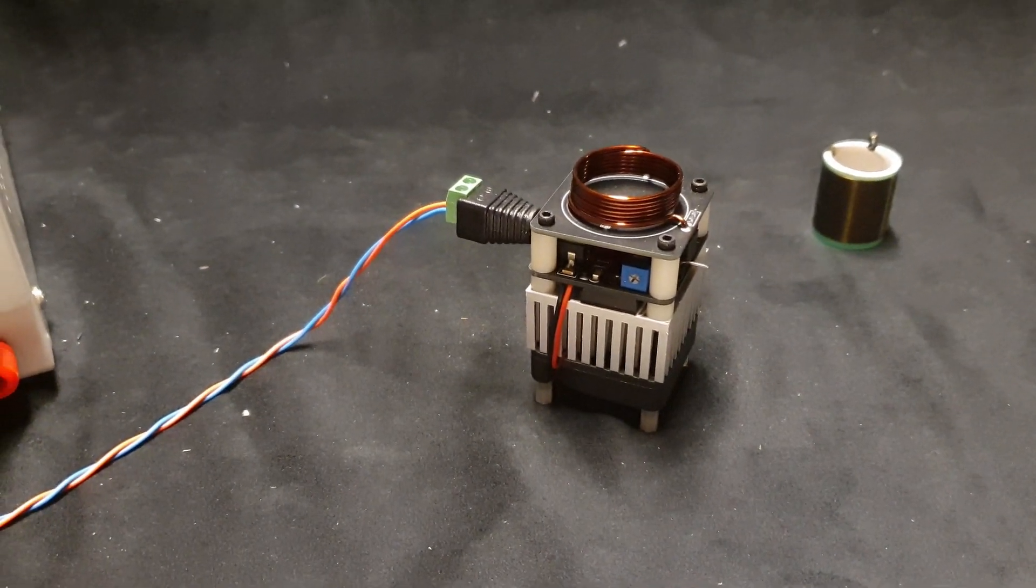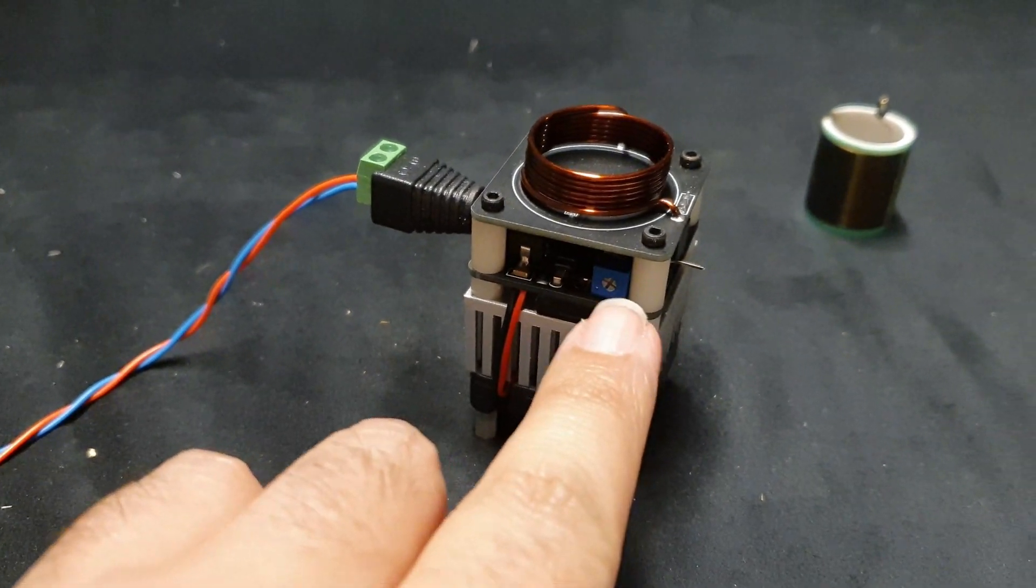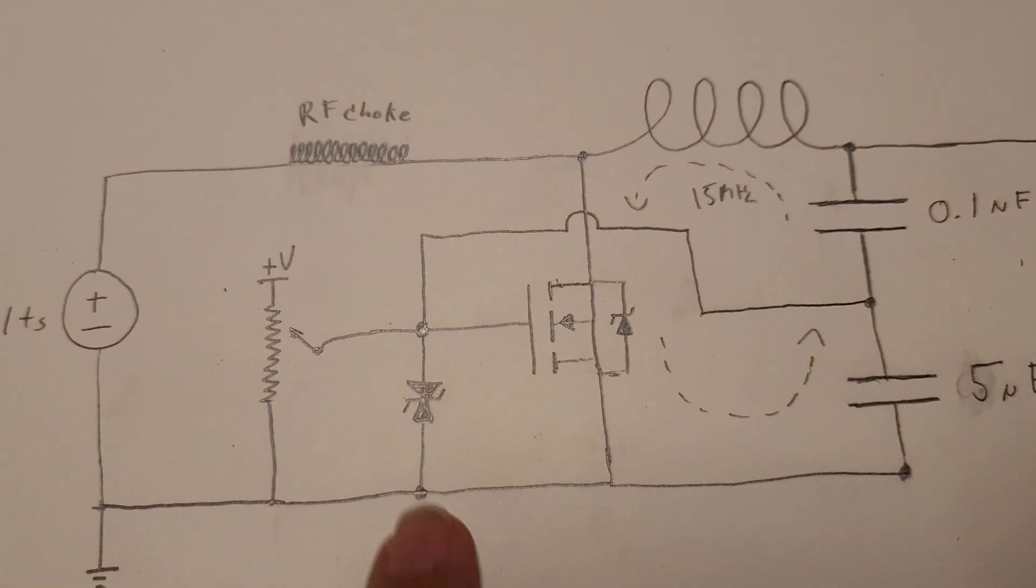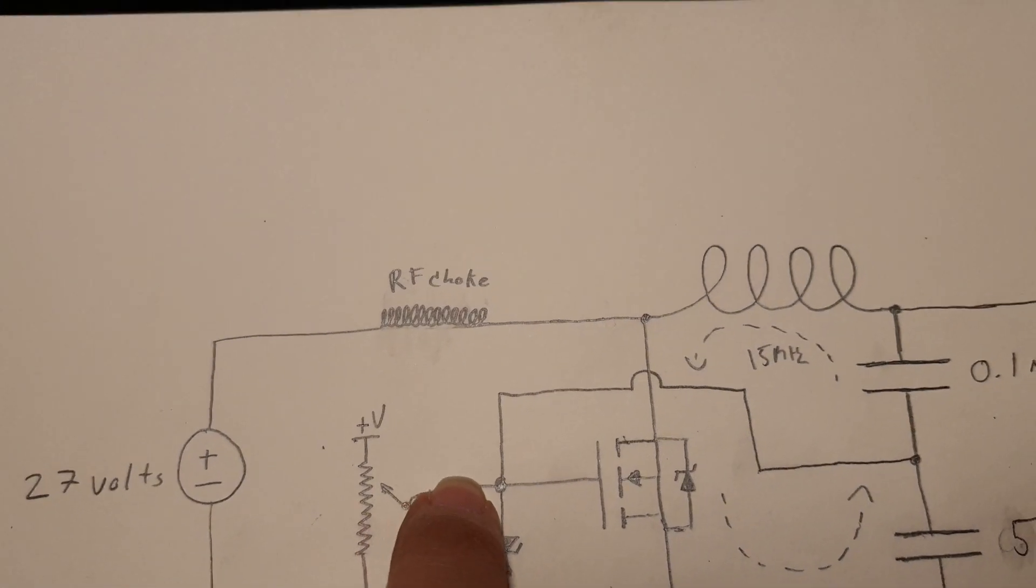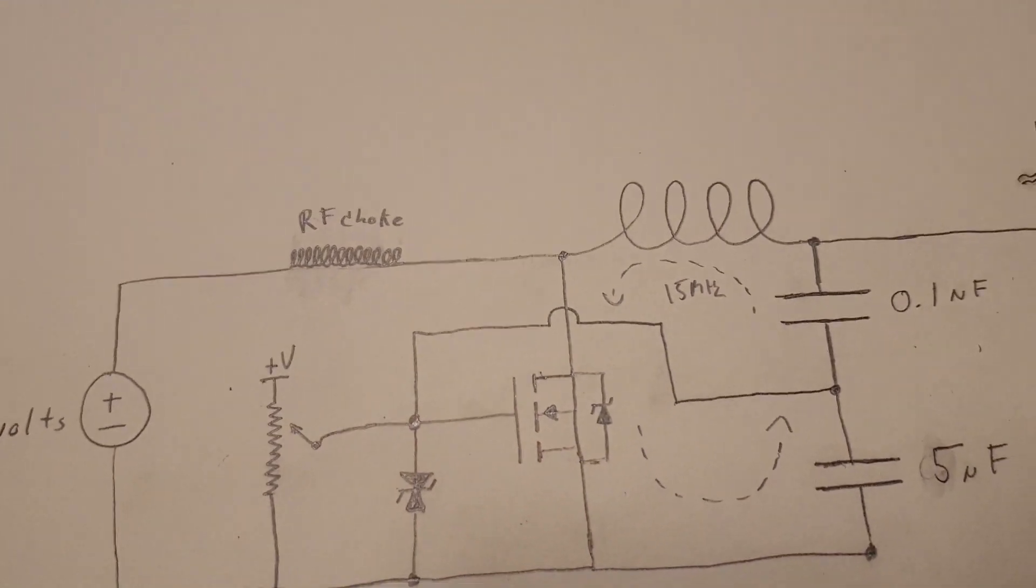So to fix that, you'll adjust this potentiometer. So I have here a schematic I'm going to talk a little bit about. That potentiometer essentially adjusts the bias on the gate of the power transistor.